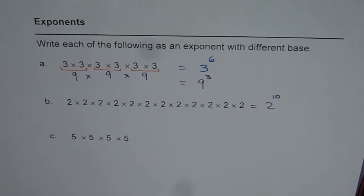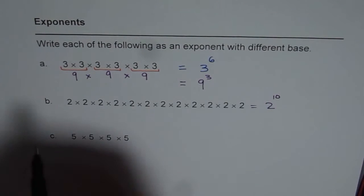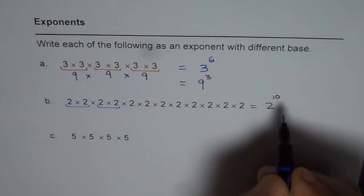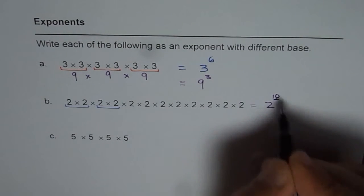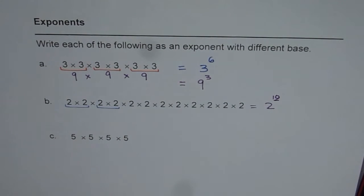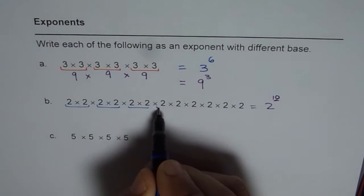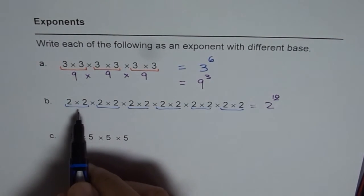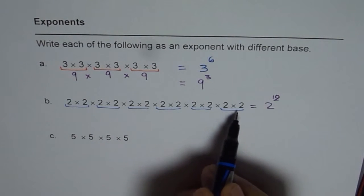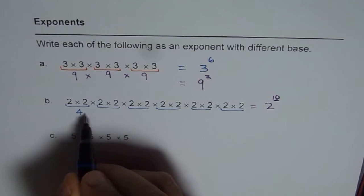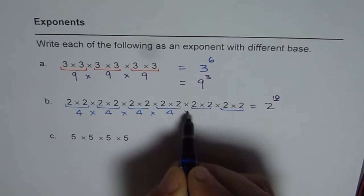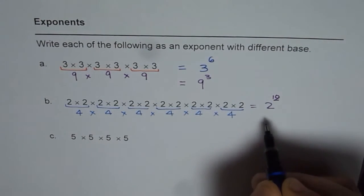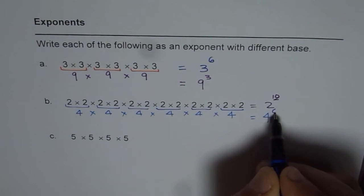Now let's group them in 2's. If I group them in 2's, I should get half of 12. I actually wrote 10 here earlier — let me make it 12. So grouping them in 2's, we should get 6 groups. That's correct. And 2 times 2 is 4, so we have 4 times 4 times 4 times 4 times 4 times 4. We can write this as 4 to the power of 6.